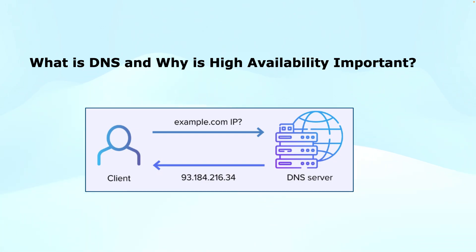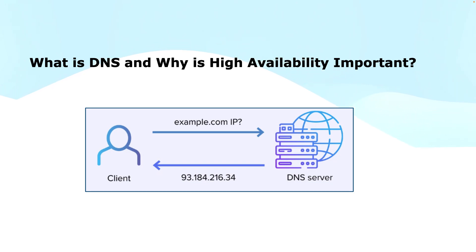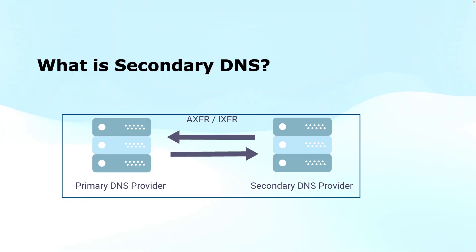This is where DNS high availability is important, because if this service is unavailable, name resolution can hamper services. High availability ensures that your DNS service remains operational even if one server fails. In a high availability setup there is no single point of failure — if the primary DNS server goes down, the secondary DNS server takes over seamlessly to ensure continuous access to your network resources.